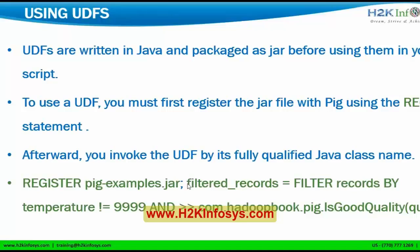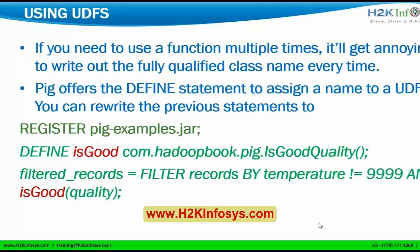For example, if I have a script: filtered_records = filter records by some temperature or some other condition, you have to give com.hadoop.book.pig — for example, if you want to check some functionality on your temperature. This is how it's called. Also, if you need to use a function multiple times, it is much more difficult to write all the package name, then the class name, then calling your function. Rather than writing that whole big text, I can just define it by giving a new name for the functionality.